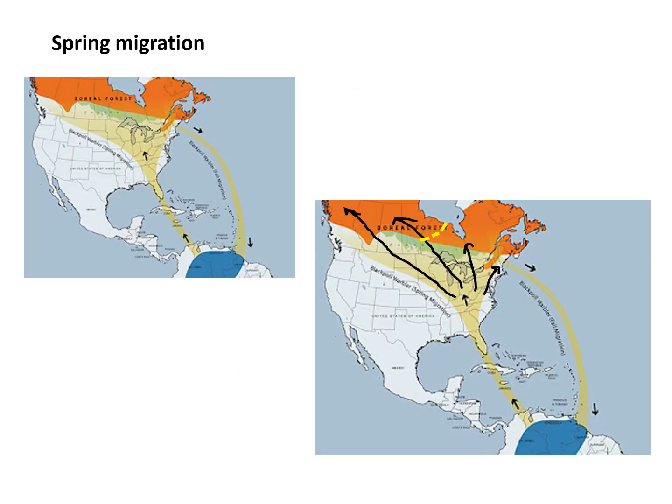The spring migration is based on less detailed data. The upper left map shows just an arrow in the U.S. indicating that once the birds are in the U.S. they go north, but you can imagine they might fan out evenly as shown by the black lines I've drawn on the lower right map.